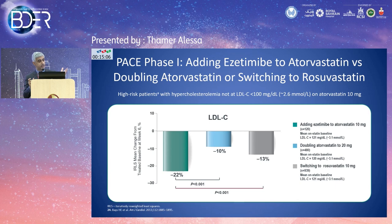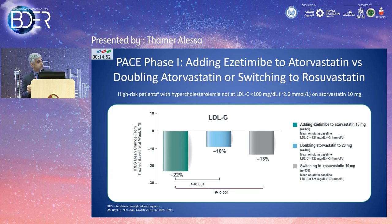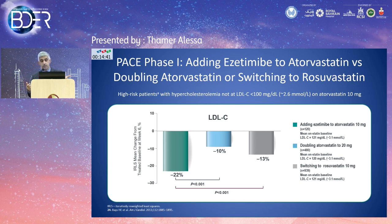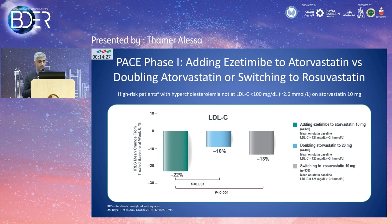A trial comparing three treatment approaches in patients on atorvastatin 10 mg not at goal showed: adding ezetimibe 10 mg achieved 22% further LDL reduction; doubling atorvastatin to 20 mg achieved less; and switching to rosuvastatin 10 mg achieved only 13% reduction from baseline. The greatest lowering effect came from adding ezetimibe to the baseline statin, demonstrating the superiority of combination over dose escalation or switching.